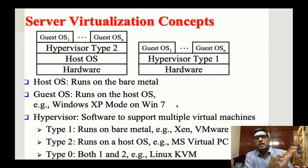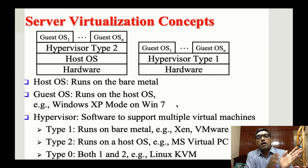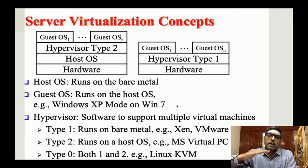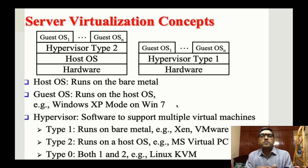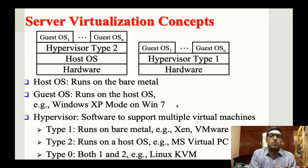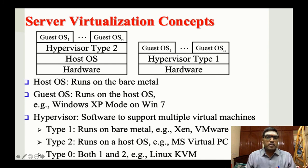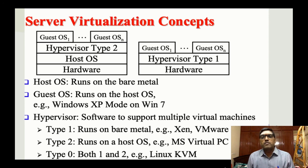There are two types of hypervisor setups. In one type, the host operating system is present with hardware at the bottom layer, hypervisor in the middle, and guest operating systems on top. In another type, there is no host operating system — different operating systems run directly on the hardware. Hypervisor Type 2 has the host operating system running on bare metal, with guest operating systems running on the host. For example, Windows XP mode on Windows 7.